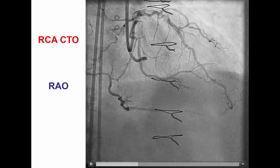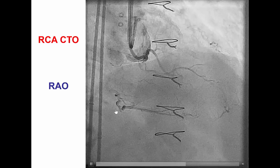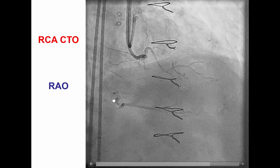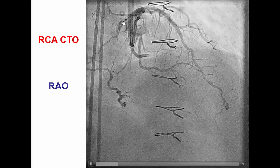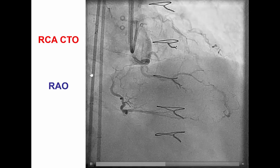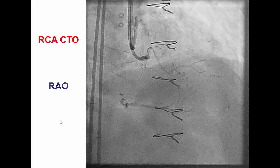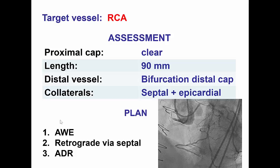This is the area of view demonstrating a good-sized distal vessel, and mainly this large tortuous epicardial collateral coming from the distal circumflex. We therefore have an RCA CTO with a clear proximal cap, a long occlusion length, a bifurcation at the distal cap at the PDA and PLV, and mainly epicardial but also some septal collaterals.